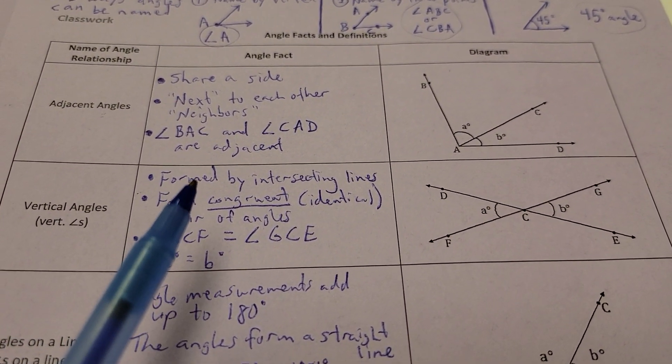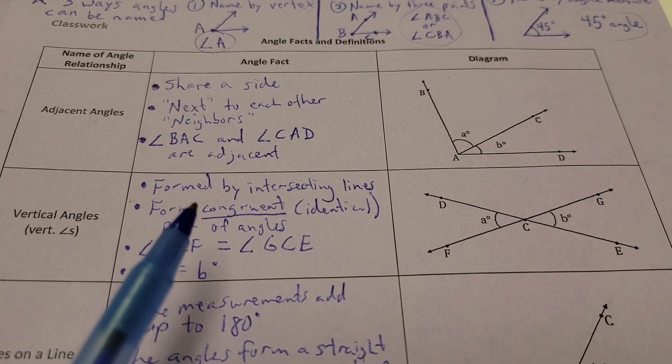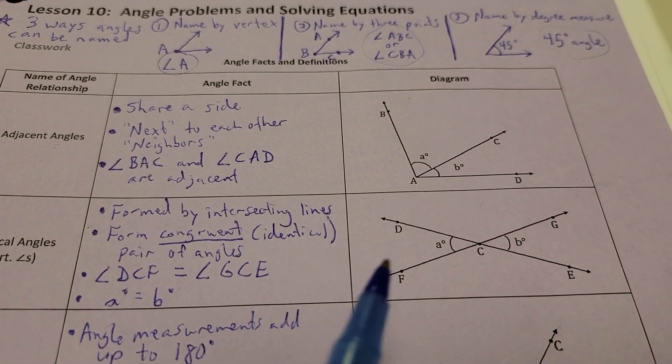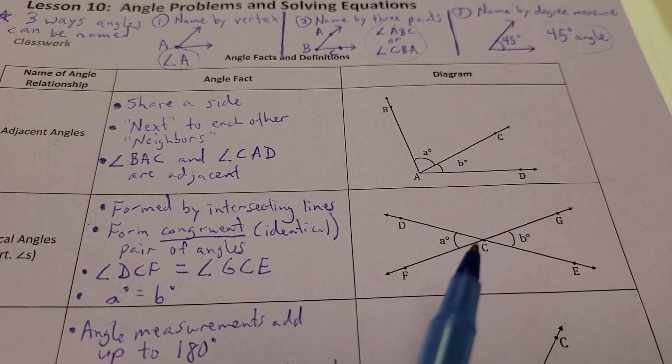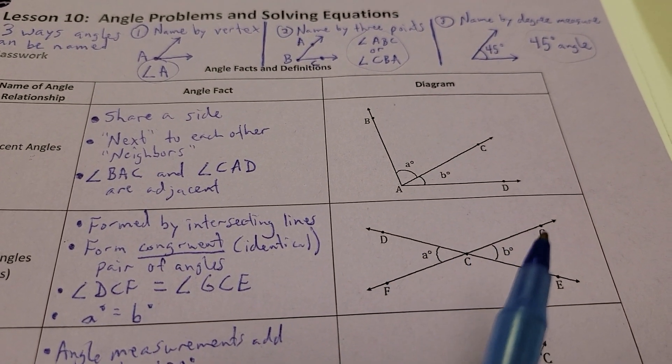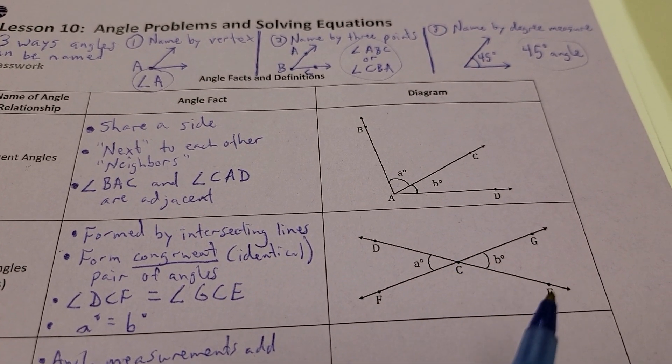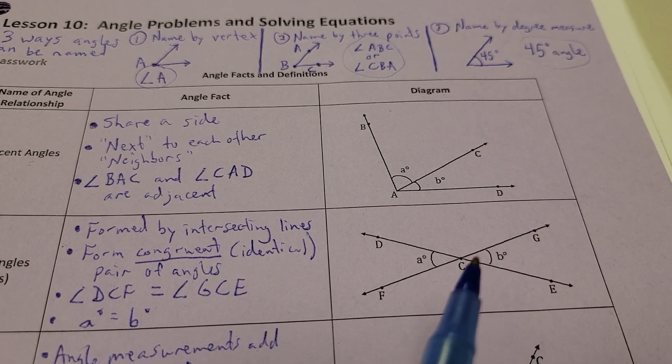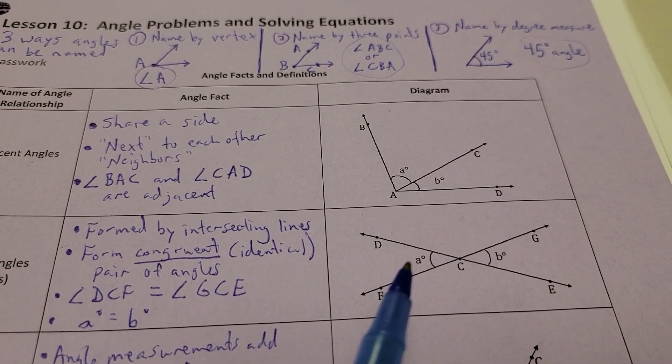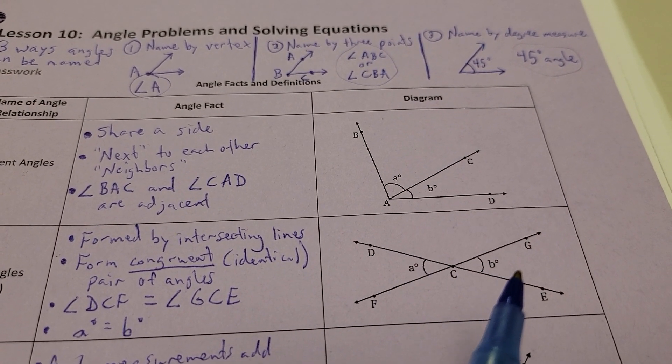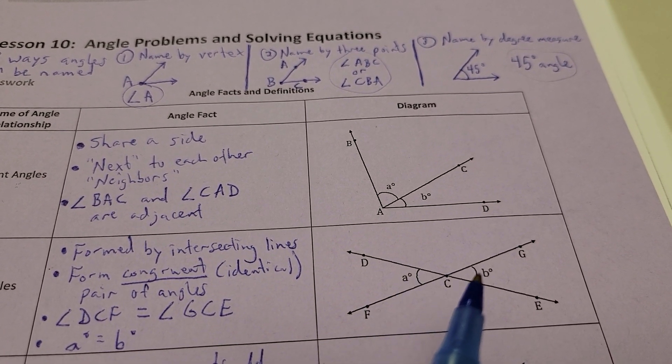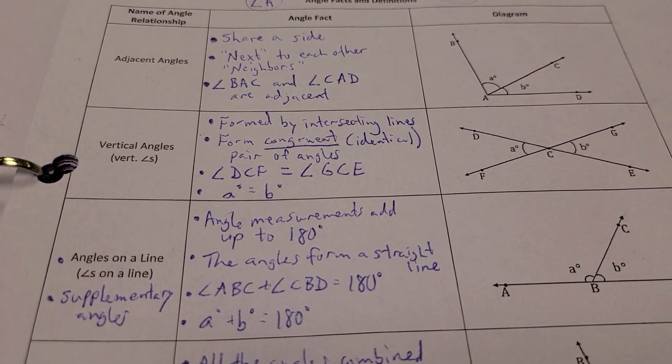Vertical angles. They are formed by intersecting lines. And they form congruent or identical pairs of angles. For example, in this picture, angle DCF is equivalent to angle GCE. They don't have the actual number in here for us. They have A degrees and B degrees. Those are the same measurement. This measurement and this measurement will be the exact same. Vertical angles.